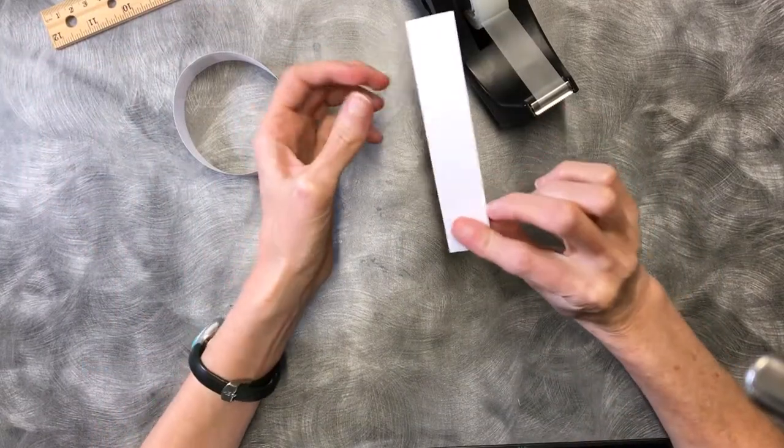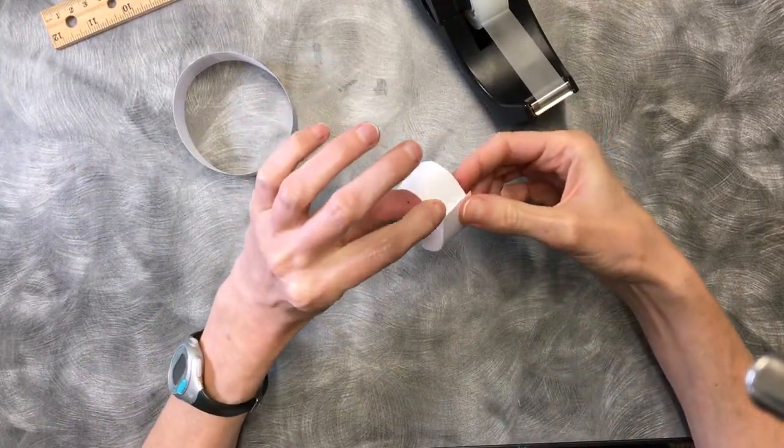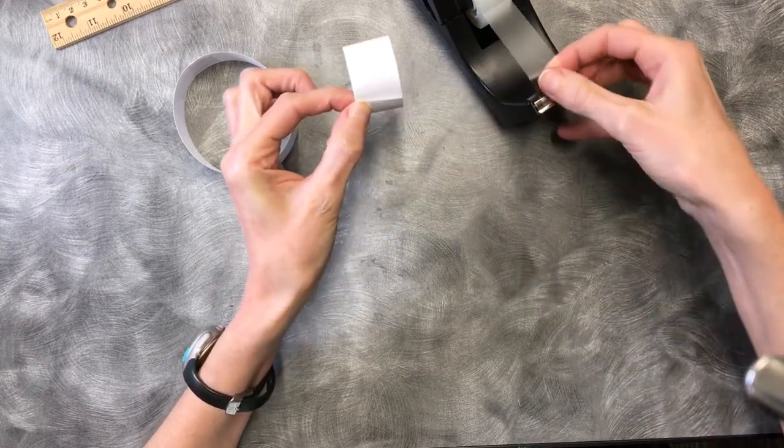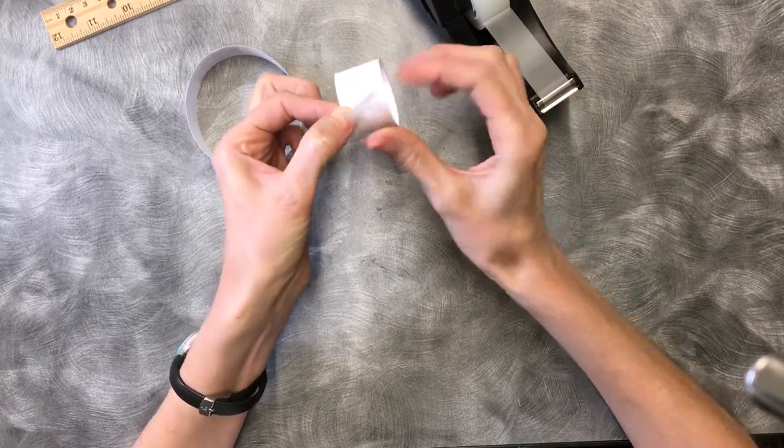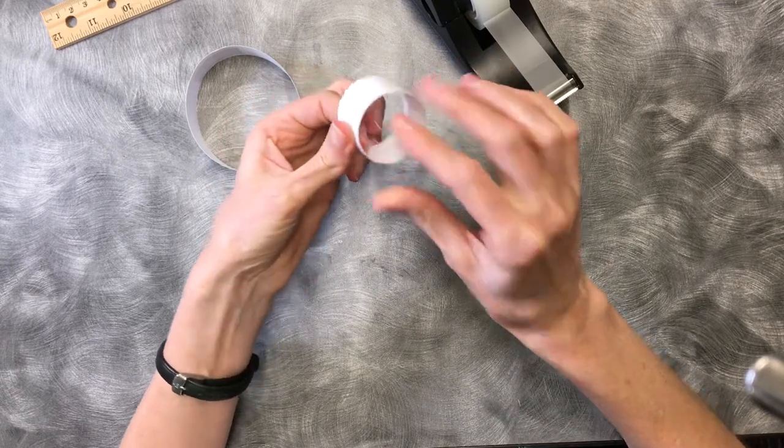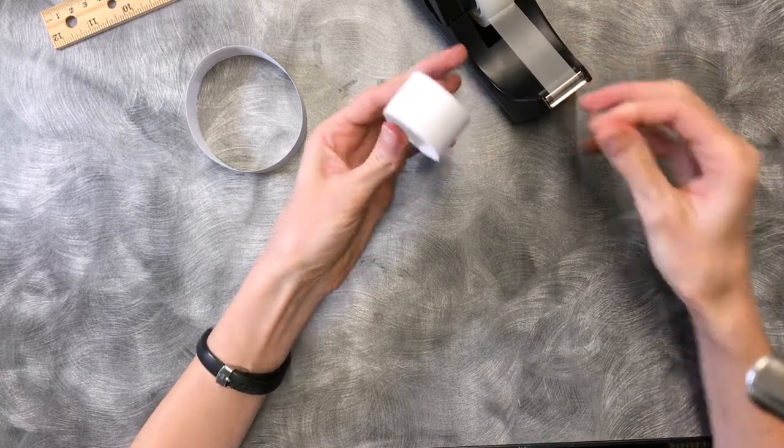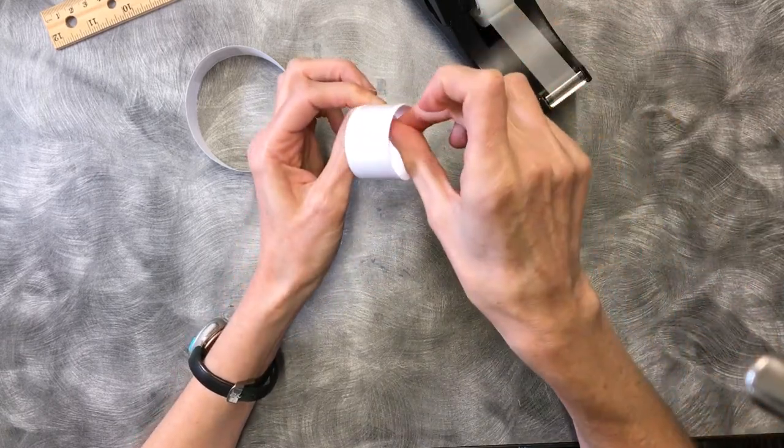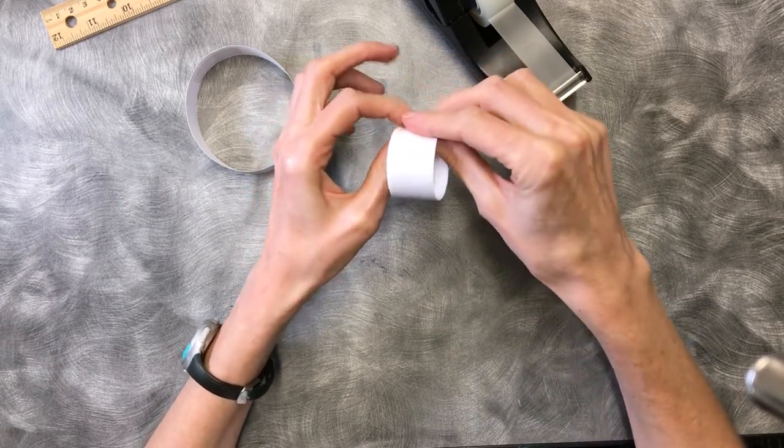Then you take your second strip, your five by one inch strip and the same thing. Bring those two short ends together. Grab a piece of tape and tape it together. Just for a little reinforcement, put a small piece inside. The small piece inside is optional especially on the small loop.